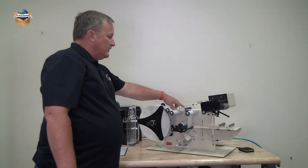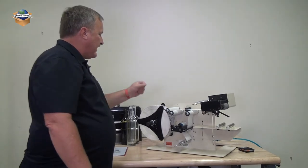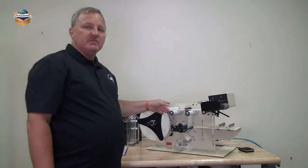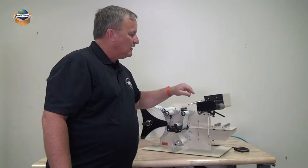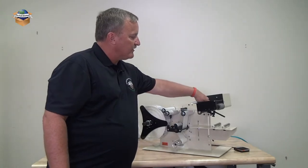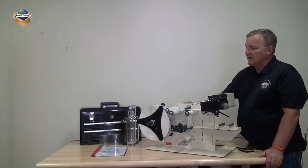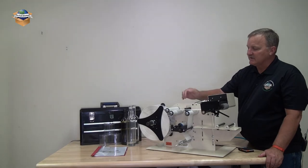The next thing we need to do is to teach the photo eye where the gap is in the labels. This procedure should be done with every new roll of labels. The goal is to get the gap at the edge of the peel plate. We'll turn the unit on and we're going to feed the labels until they get past the photo sensor.